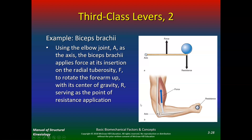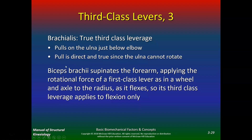Third class levers are the most common and not very efficient, so you have to lift a lot of weight to build those biceps. The brachialis is a true third class lever — it pulls on the ulna just below the elbow, and the pull is direct since the ulna cannot rotate. The biceps brachii supinates the forearm, applying the rotational force of a first class lever as it flexes — so it's a third class lever for flexion only, but when it supinates, it becomes a first class lever. The biceps can be both third and first class, but still not efficient.